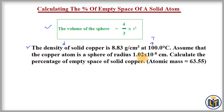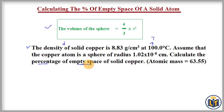The shape of the copper atom is spherical with radius 1.02 × 10⁻⁸ centimeters. The question asks us to calculate the percentage of empty space in solid copper. The atomic mass of copper is given as 63.55 gram per mole. To find the empty space, we first need to know the volume occupied by the copper atoms.